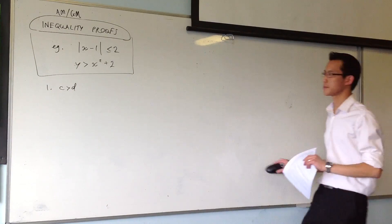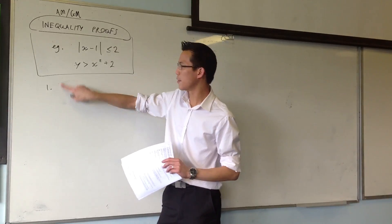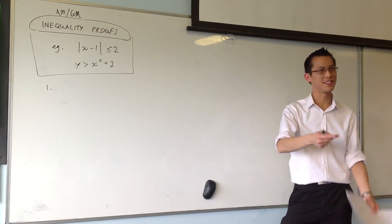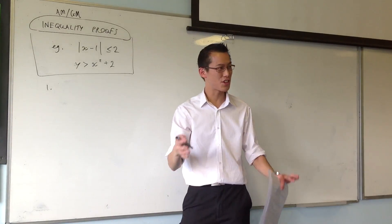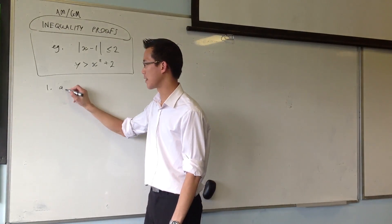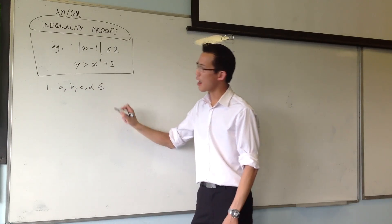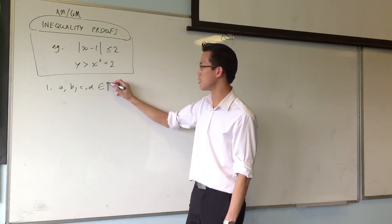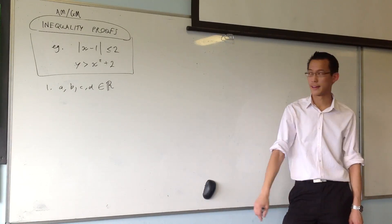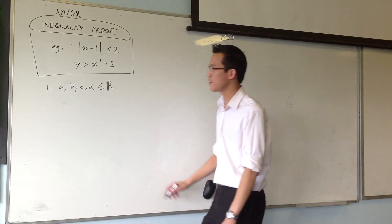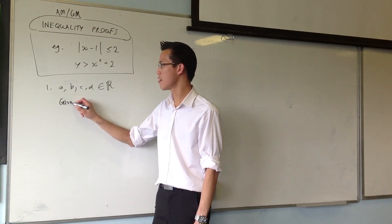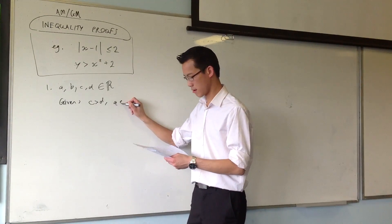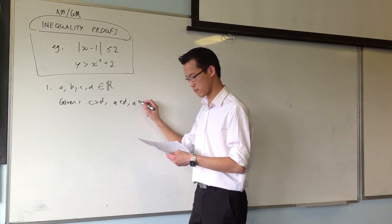I'm going to give you four numbers, and let's say all of the numbers are real. Now you will have to brush up a little bit on your set notation. So if I want four numbers and I want them all to be real, I'm going to write it like this: A, B, C, D — they are all elements of, that's what the funny E means, the real number set. The R with the double line. Now given that, and also given these relationships, I'm going to give you three relationships.